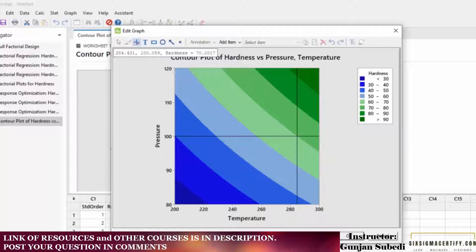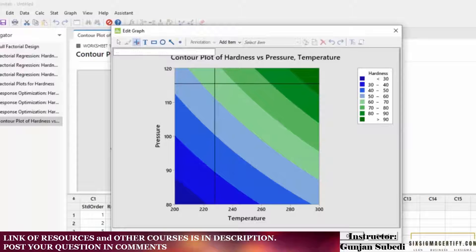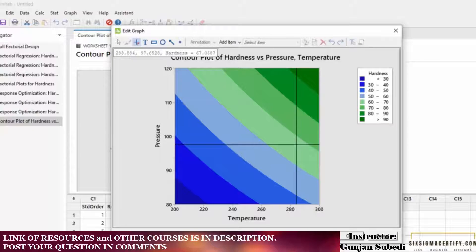So it shows me that at 100 units of pressure, the maximum hardness I get is 70 units. But for that I have to increase the temperature to around 284 degrees. So the contour plot is very beneficial graphical tool to let you understand how should your factors be adjusted so that you get the same range of response over different factors.